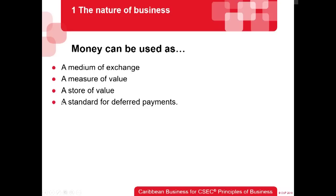Money as a standard of deferred payments — what does this mean? Money can be used to credit things. Back in the batter system, you couldn't really say 'give me a pig today and I'll bring back the change tomorrow' — that wasn't practical. But with money, you can actually credit things. You can buy something today and pay later, because the money doesn't spoil. You can get the product today and pay it later — a standard for deferred payments.